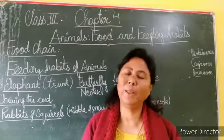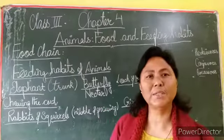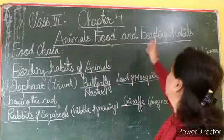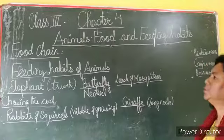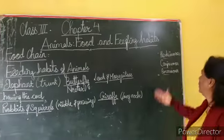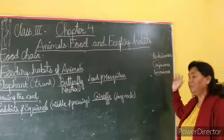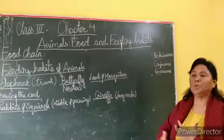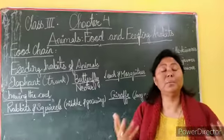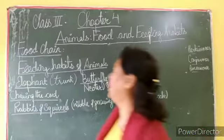Welcome back. We are going to continue with the same chapter, chapter number 4 - Animals, Food and Feeding Habits. I'm just going to review what we had learned. We had learned about carnivorous animals, omnivorous animals, and before that I had explained to you who all come under the animal kingdom. So you must have understood that.